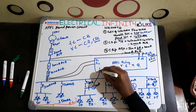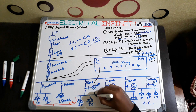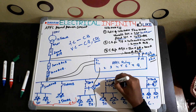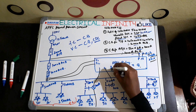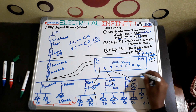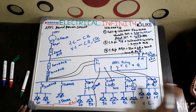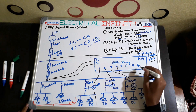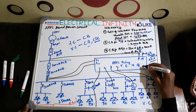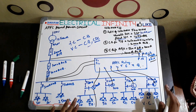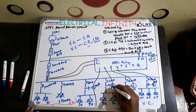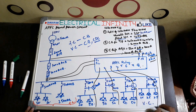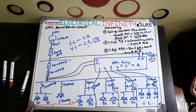Only the variable capacitors are connected to the APFC relay. From CDC 1, connect it to terminal 1 and the second terminal to neutral. From CDC 2, connect to terminal 2; from CDC 3, to terminal 3; from CDC 4, to terminal 4; and so on. You can connect a maximum of 8 CDCs to the APFC relay. All the neutral terminals are shorted and connected to neutral.